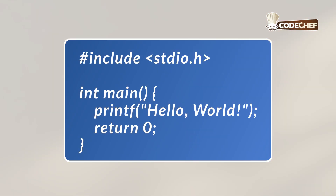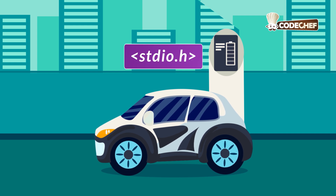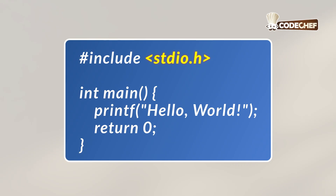Alright, so let's learn how to make our very first C program. Don't worry if this looks new, we'll go step by step. At the very top, we'll see hash include stdio.h. This line is like telling C, hey, I need tools to show messages on the screen. Think of it like plugging in a toy without batteries — it won't work. stdio.h is the battery pack that gives us the power of input and output. Next, we see int main.